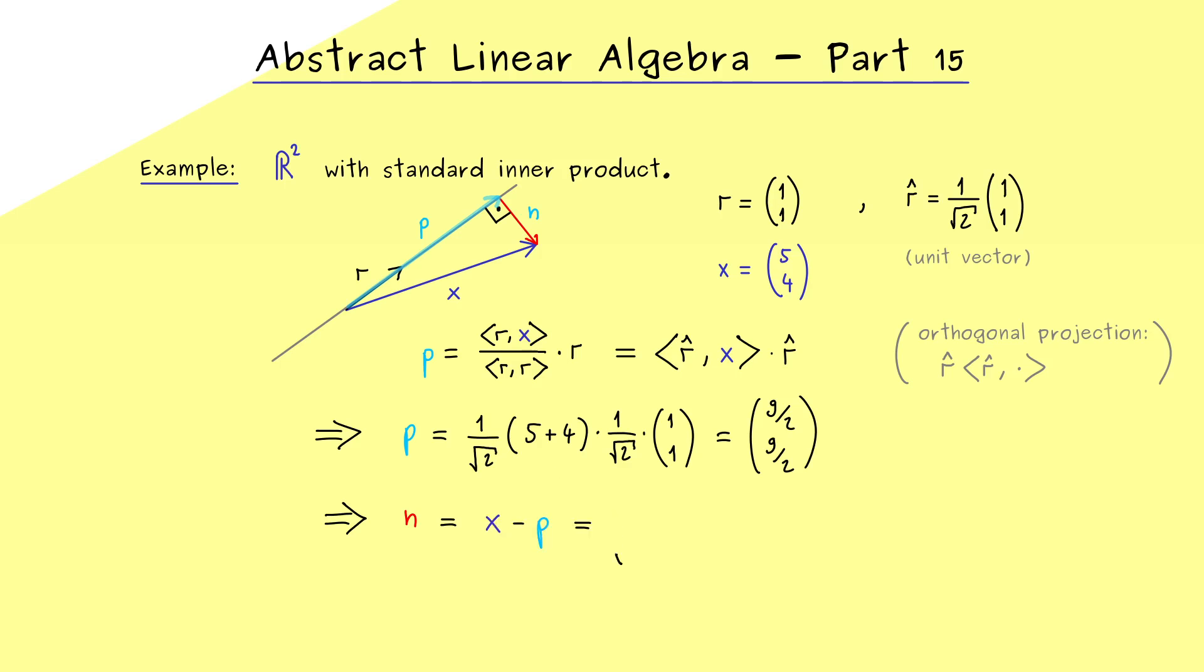And then in the next step we can also calculate n, which is simply x minus p. So in the first component we subtract 9 halves from 10 halves, so we get out 1 half. And in a similar calculation in the second component we get out minus 1 half. So you see calculating orthogonal projections is really not so complicated.